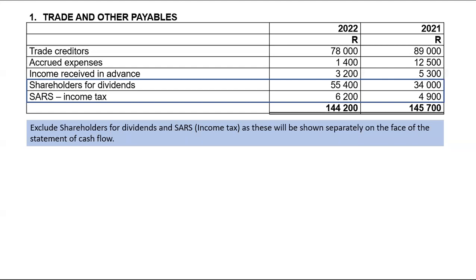When I exclude $55,400 and $6,200 from the 2022 trade and other payables, I get $82,600. I simply took $144,200 minus $55,400 minus $6,200 to get $82,600. For 2021, my total balance is $145,700. From that, I need to deduct $34,000 for shareholders for dividends and also deduct SARS income tax of $4,900, giving a new balance of $106,800.